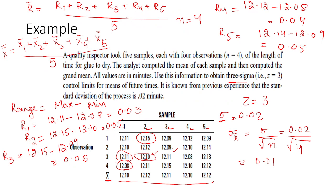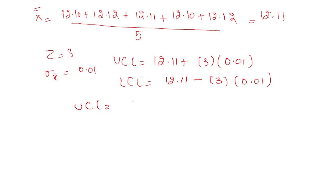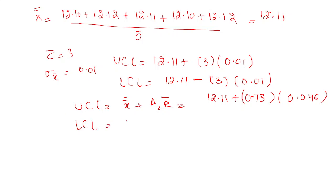Using the formula, the upper control limit is x-double-bar plus A2 times r-bar, which is 12.11 plus 0.73 times 0.046. The lower control limit is 12.11 minus 0.73 times 0.046. This is how, using two different formulas, you can calculate the control limits for the mean chart.